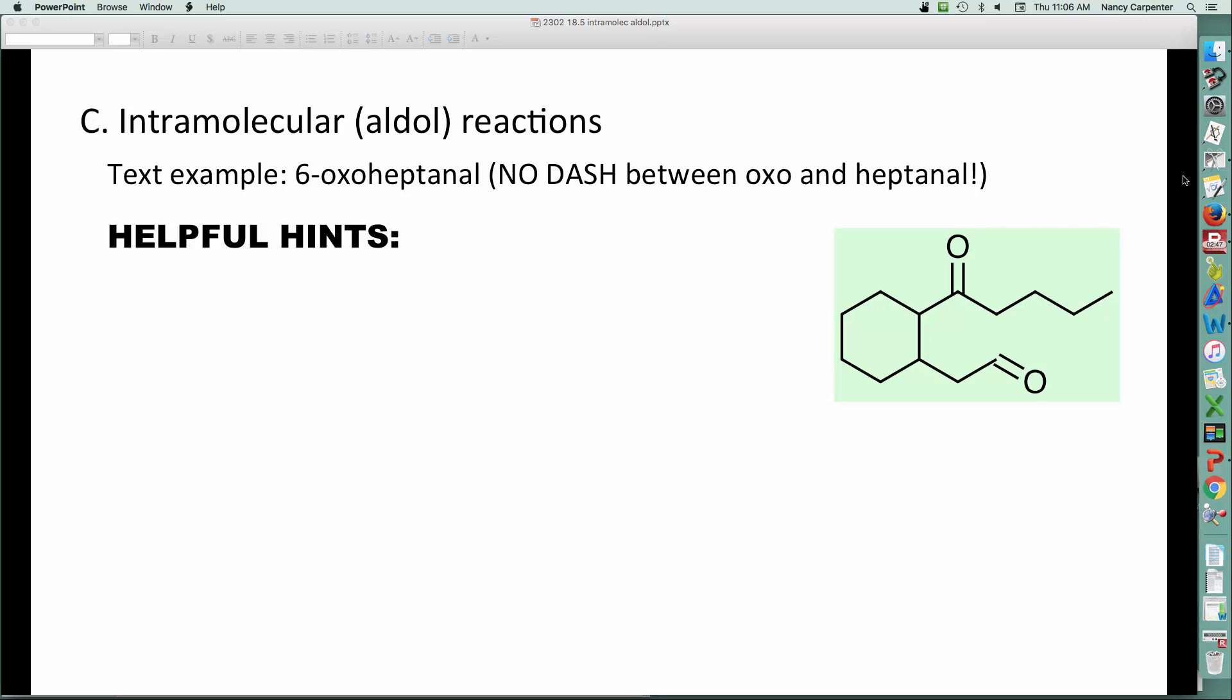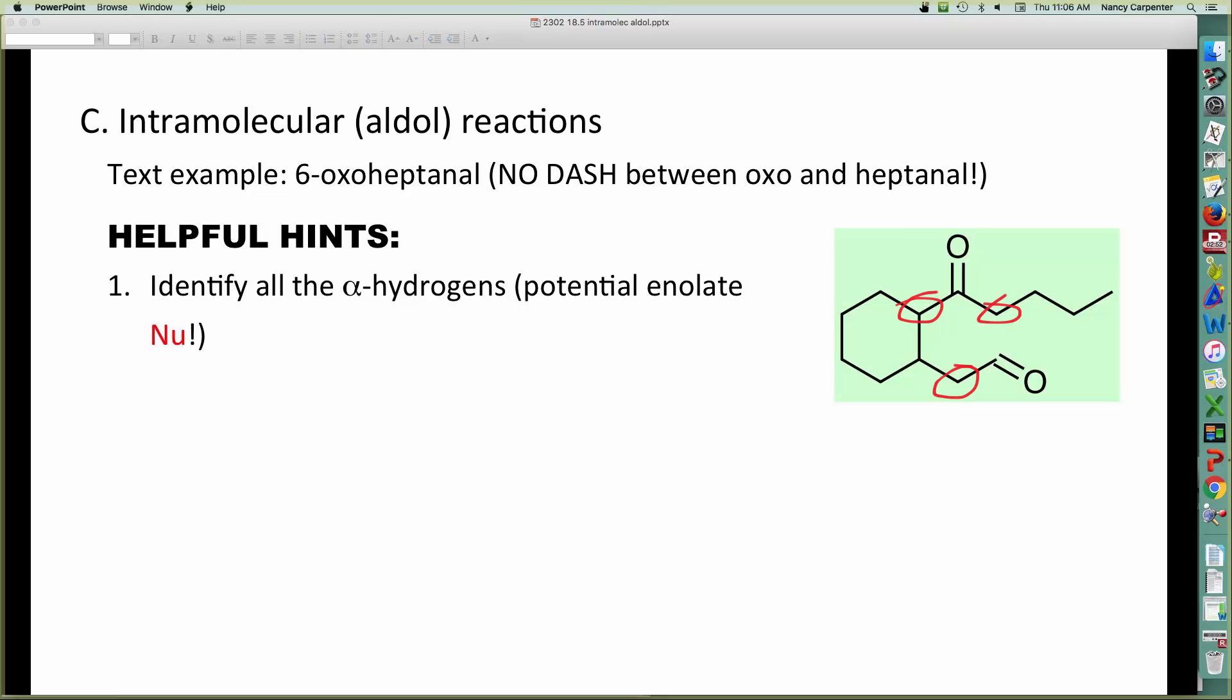Helpful hints when you're considering intramolecular aldol reactions. First of all, your nucleophiles, of course, are going to be your enolates. So you need to identify all your potential enolate nucleophiles. So I can have an enolate here, I can have an enolate here, I can have an enolate here. Those are all my potential nucleophiles.